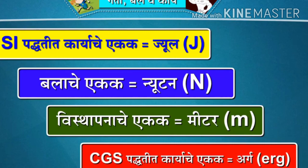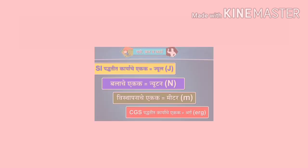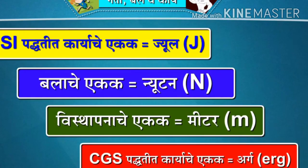In the CGS system, the unit of work is erg. याचा अर्थ असा होतो: बलाने केलेले कार्य = वस्तूला लावलेले बल गुणिले बलाच्या दिशेत झालेले वस्तूचे विस्थापन. W = F × S. SI पद्धतीत कार्याचे एकक Joule, बलाचे एकक Newton आणि विस्थापनाचे एकक मीटर आहे. CGS पद्धतीत कार्याचे एकक erg आहे.